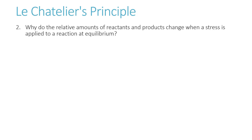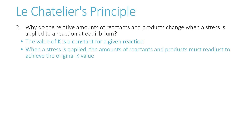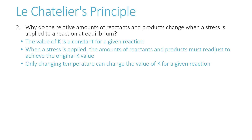Why do the relative amounts of reactants and products change when a stress is applied to a reaction at equilibrium? A stress is anything that affects the conditions of the reaction — adding a reactant or product, changing the temperature, or in gaseous equations, changing the pressure. The value of K is a constant for a given reaction, so if a stress is applied, the amounts of reactants and products readjust to achieve the original K value. Only changing the temperature can change K.